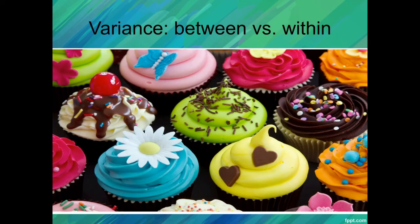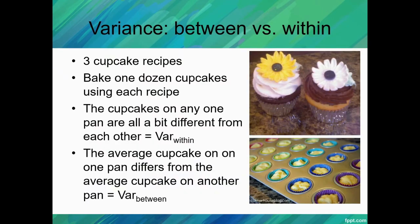Let's use an example to look at some of this. Let's just say that we had three different cupcake recipes, and we baked one dozen cupcakes using each recipe. The cupcakes on any one of the pans are all a bit different from each other. So recipe A, pan A with the 12 cupcakes on pan A - those 12 cupcakes are going to vary from each other. That's going to be our within variance.